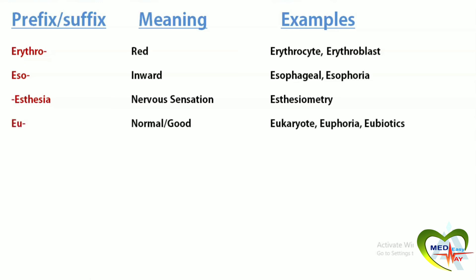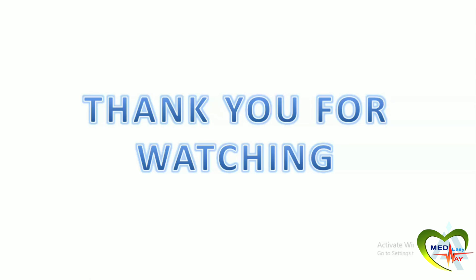Eu means normal or good. Eukaryote has a well-developed nucleus. Euphoria is a feeling of happiness. Eukaryotes study living in a healthy state. Exo or extra means outside. Exoderm is the outer germ layer. Extradural means outside the dura mater. Thank you for watching my video.